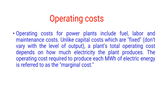The operating cost is the second major part of the cost of electrical energy. The operating cost for power plants includes fuel, labor, and maintenance costs. Unlike capital costs, which are fixed and do not vary with the level of output, a plant's total operating cost depends on how much electricity the plant produces. The operating cost required to produce each megawatt hour of electrical energy is referred to as the marginal cost.